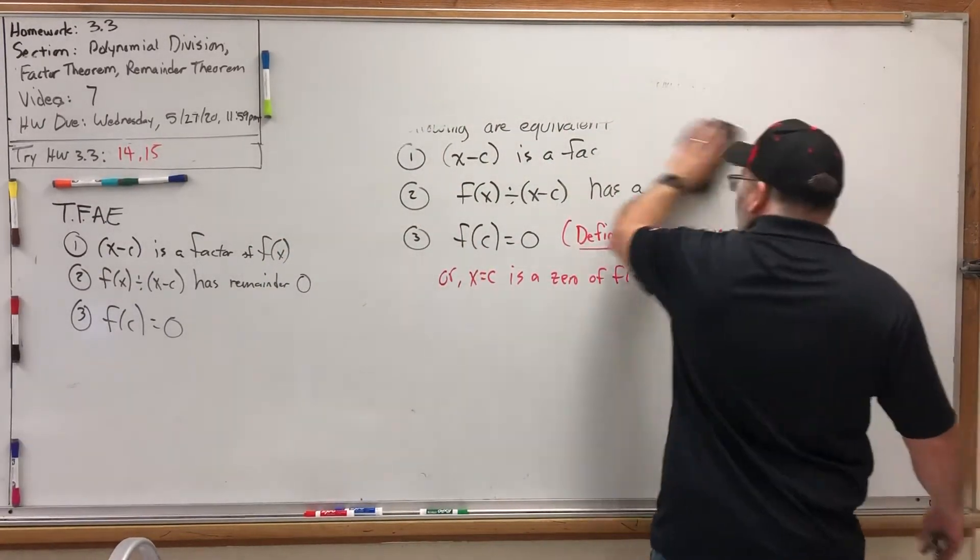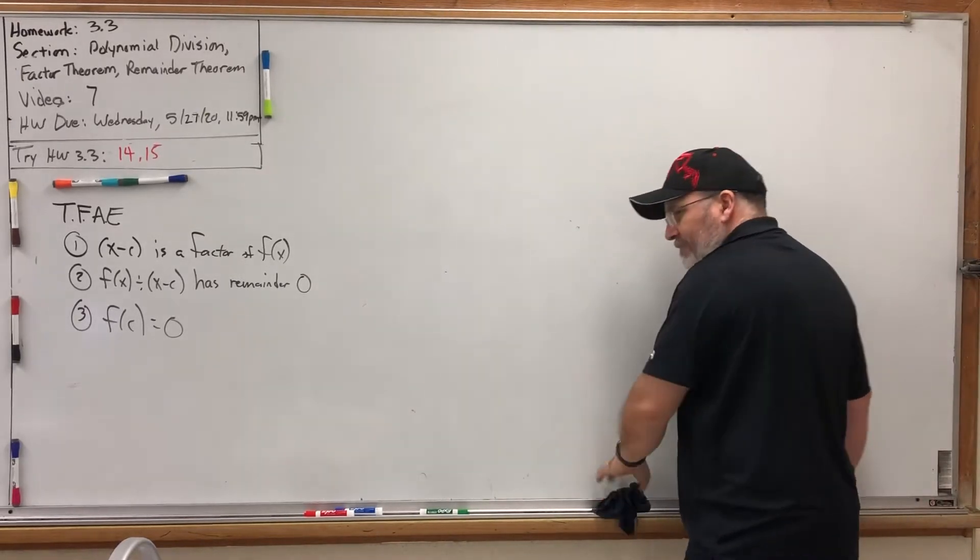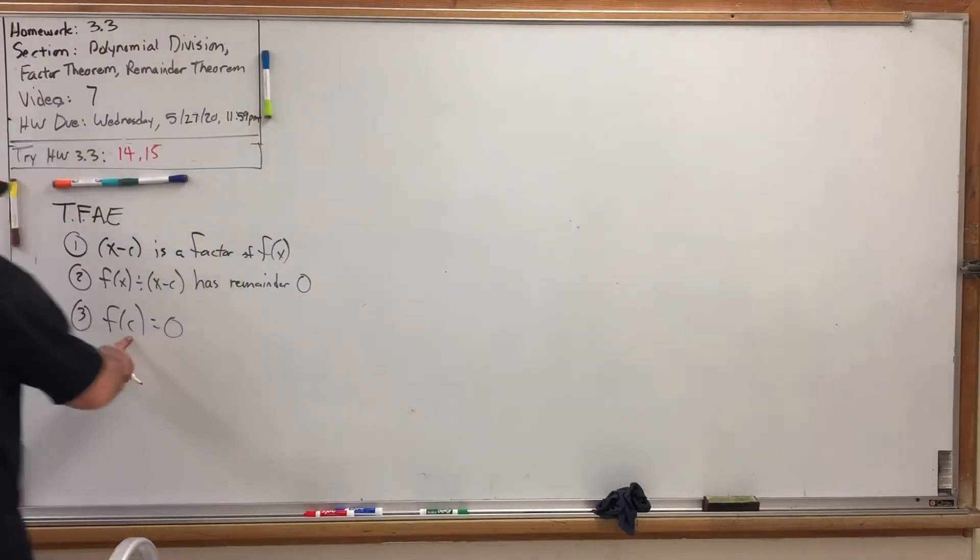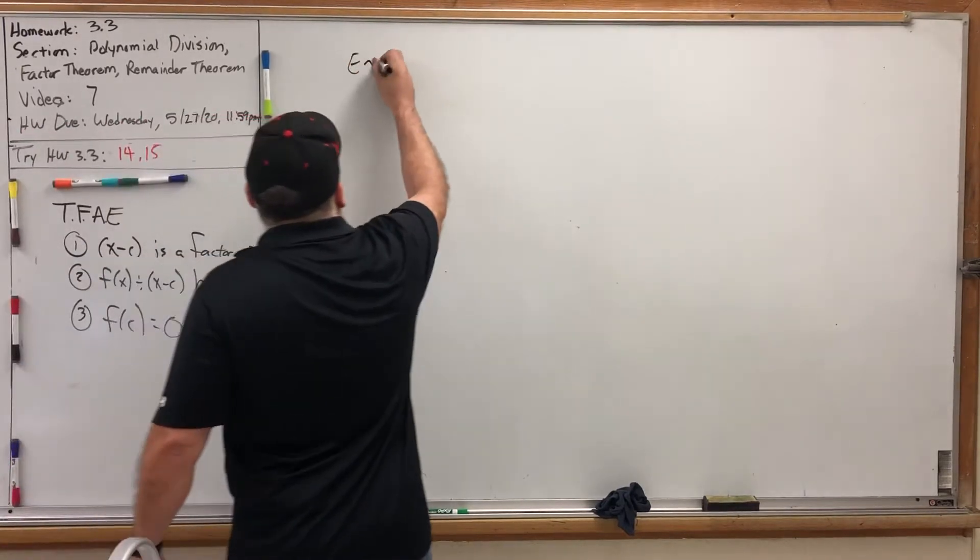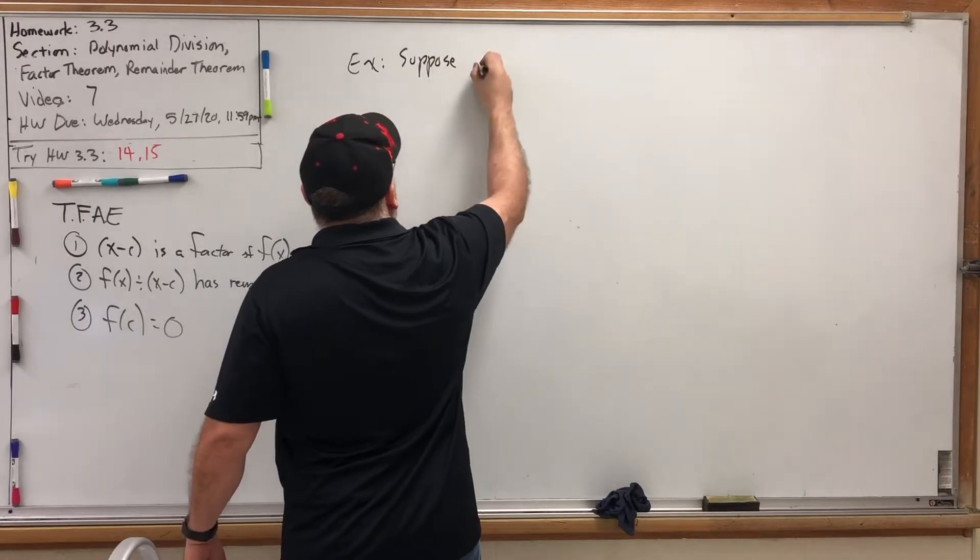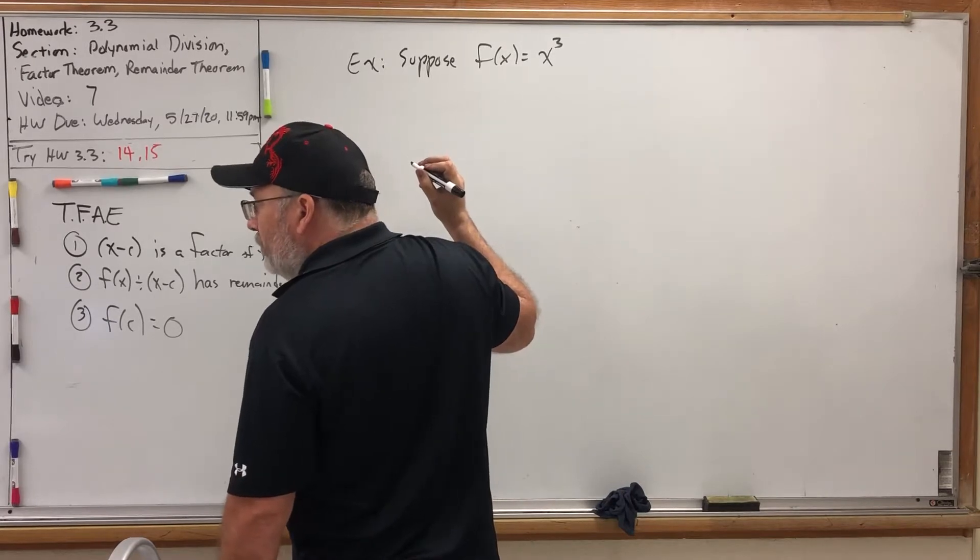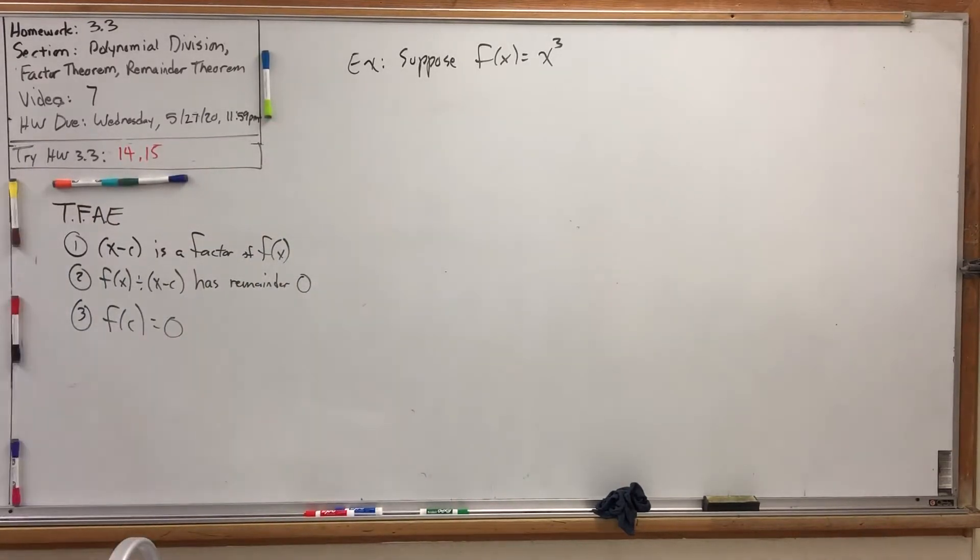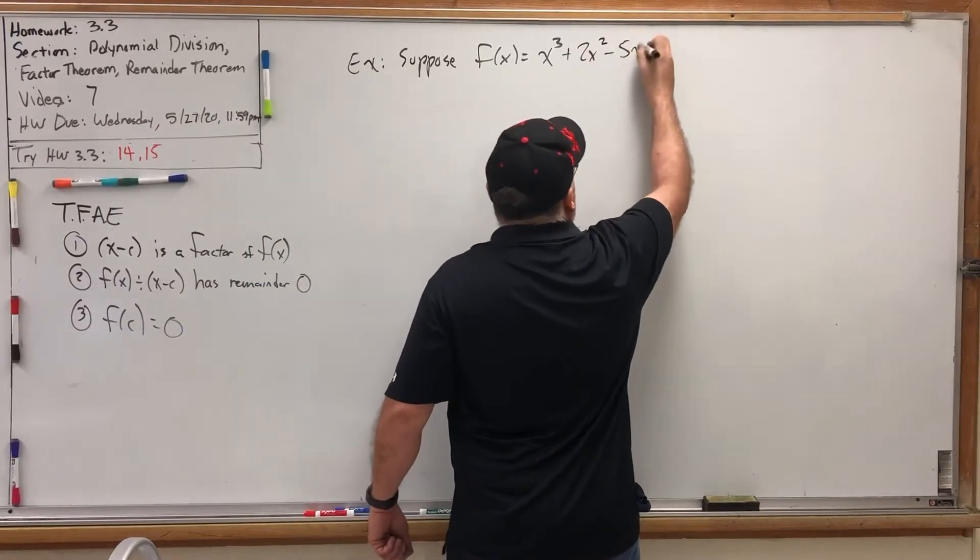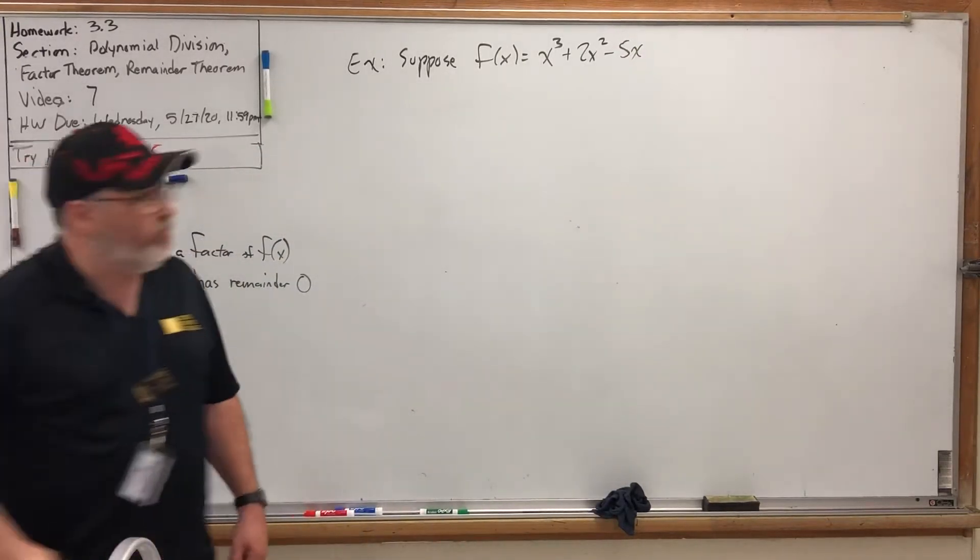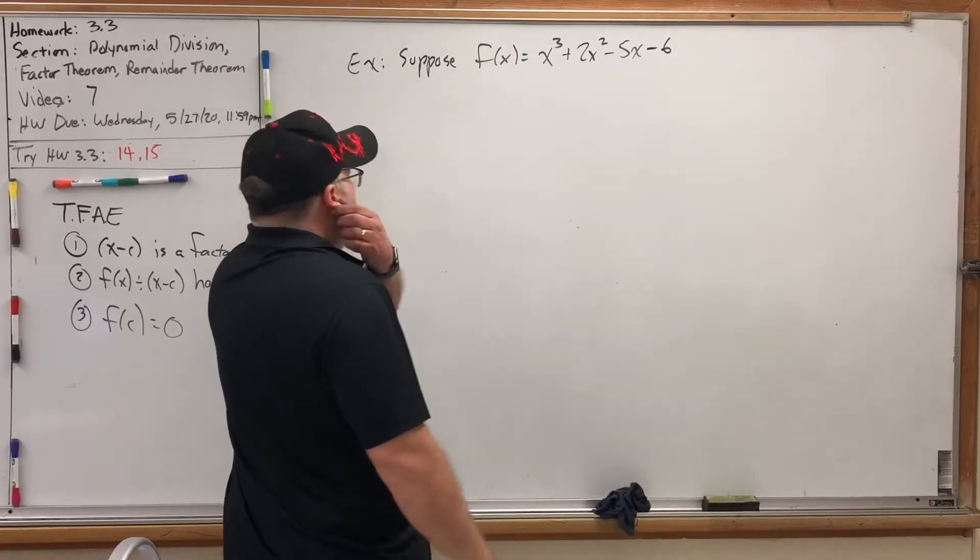So if we get one of those, we get all three of them. So how can we take advantage of that? Well, in our quest to find x intercepts for all polynomial functions, we've got to be able to divide them. So if we can find the thing equal to zero, then that gives us a factor, and we can divide to find the other factor. So for example, let's suppose F(x) is equal to x to the third plus 2x to the second minus 5x minus 6. Suppose F(x) equals that function.